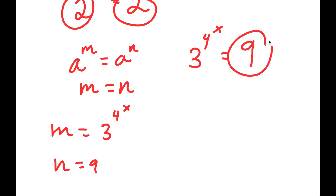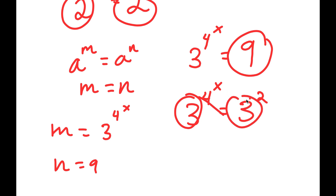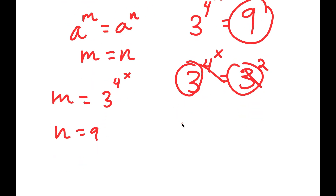Now, 9 is the same thing as 3 squared. So now I have 3 to the power of 4 to the power of x is equal to 3 squared. Again, I can use this property because both my bases are the same, so this means that 4 to the power of x is equal to 2.